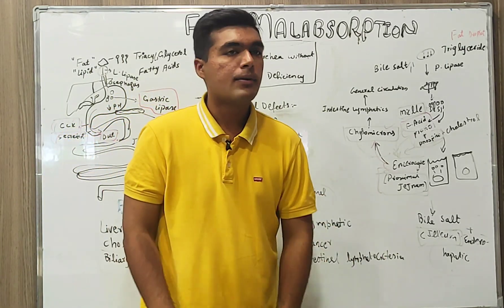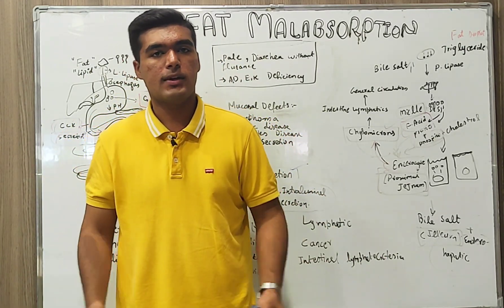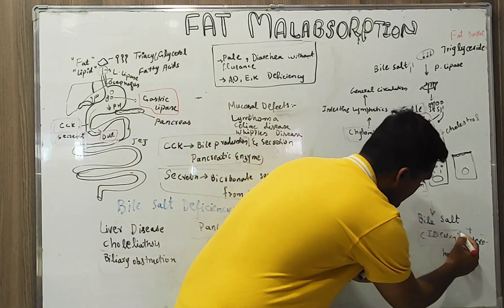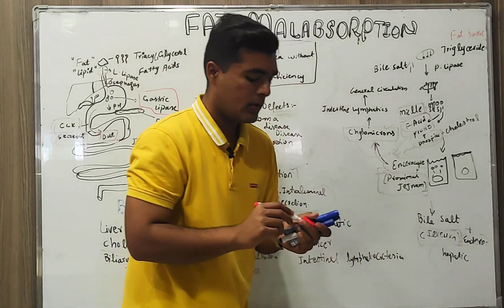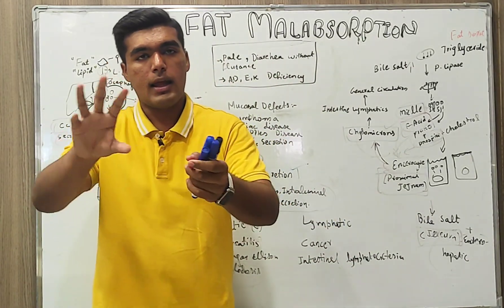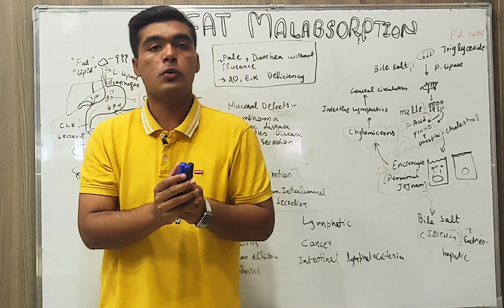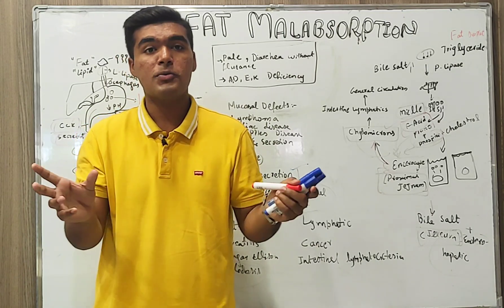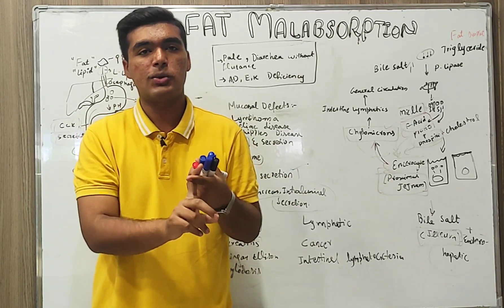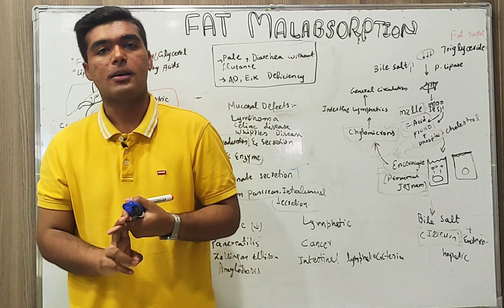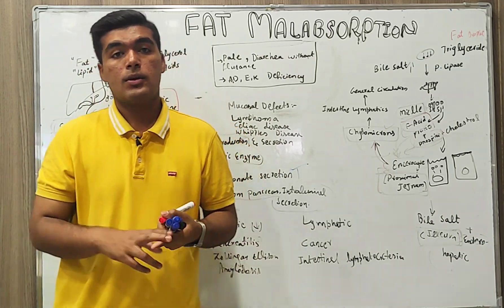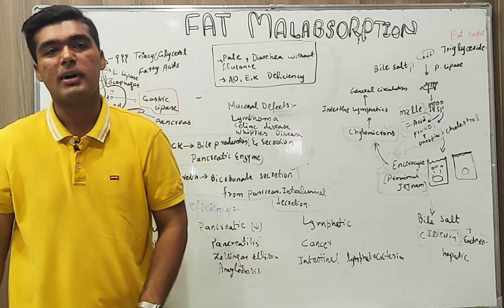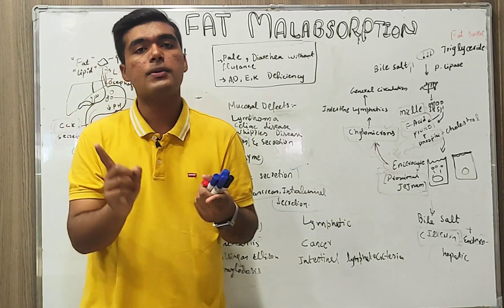We also have bile salt absorption. Bile salt absorption takes place in the ileum via the phenomenon of enterohepatic circulation. That is why we say bile is stored in the liver and secreted by the gallbladder — this is due to that enterohepatic circulation.